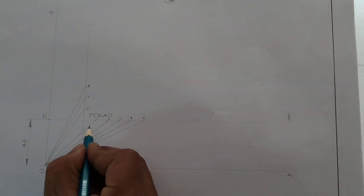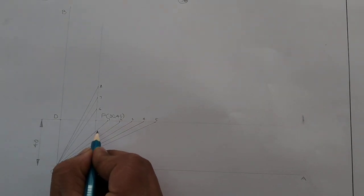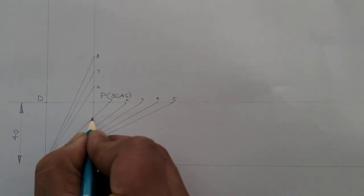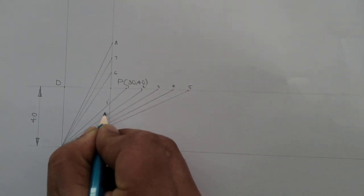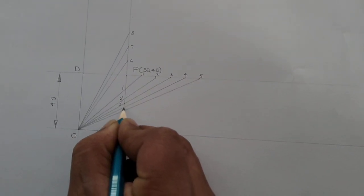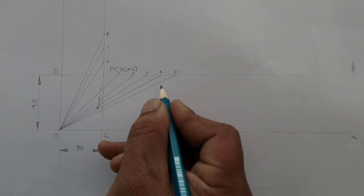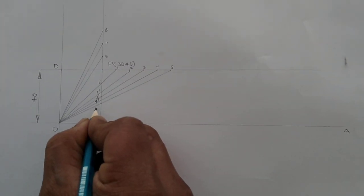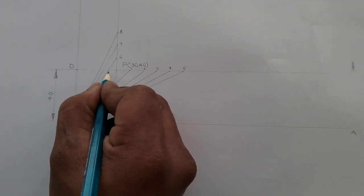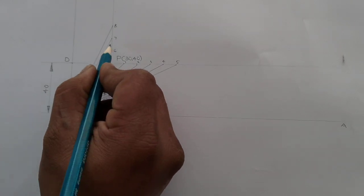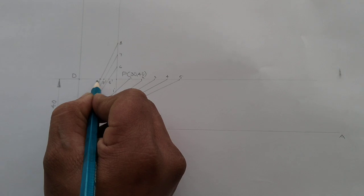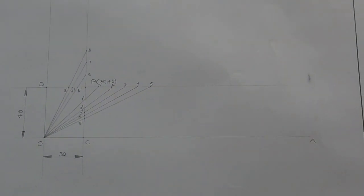Then after that, here we can mark intersection points. This is the first line 1 to O, so its intersection with the vertical line — that point becomes 1 dash. Similarly, this point becomes 2 dash. The 3rd line intersection point becomes 3 dash, 4th line becomes 4 dash, and 5th line becomes 5 dash. Similarly, the 6th line intersection with the horizontal line becomes 6 dash, the 7th line intersection becomes 7 dash, and the 8th line becomes 8 dash. So in this way we can mark all the dash points.